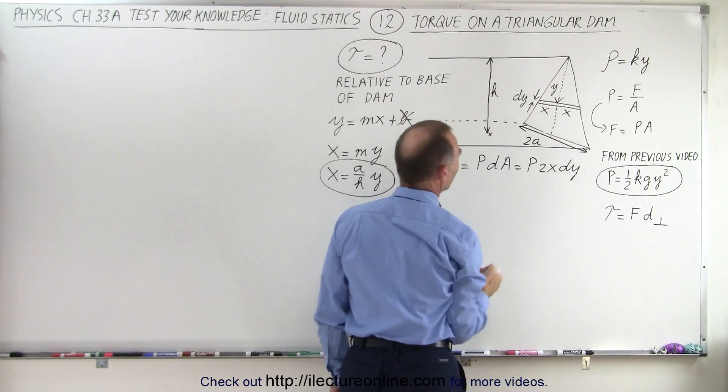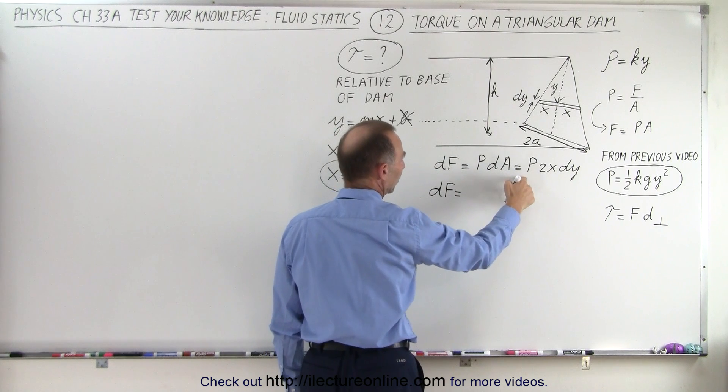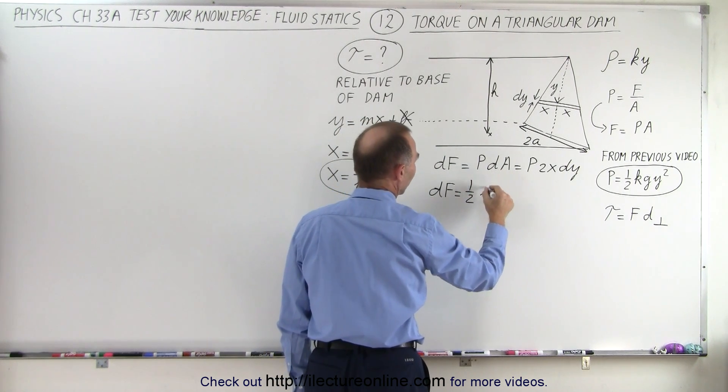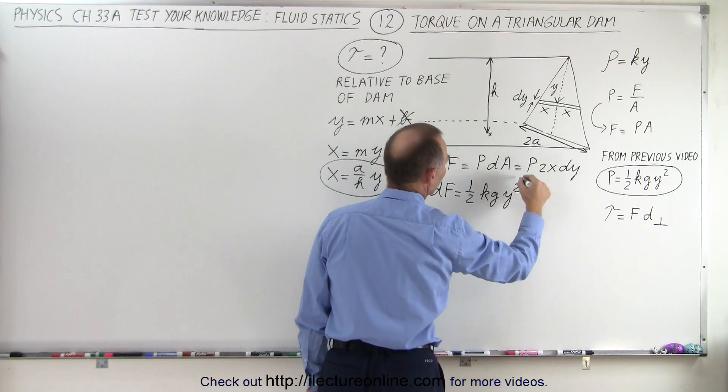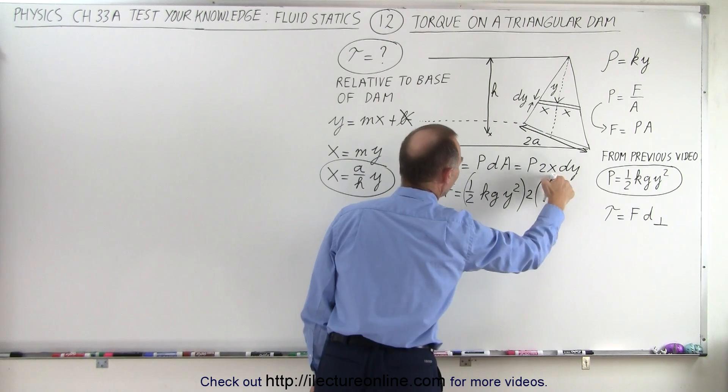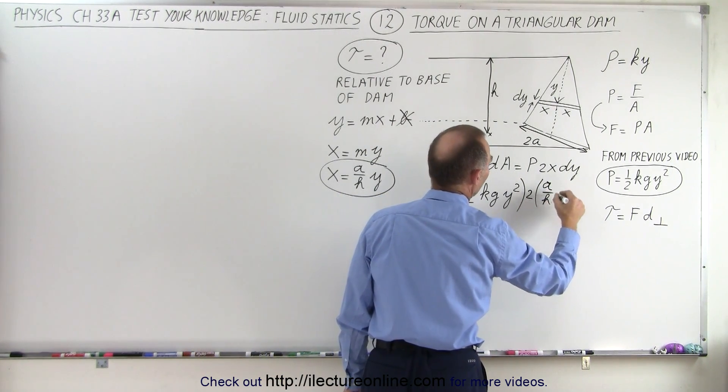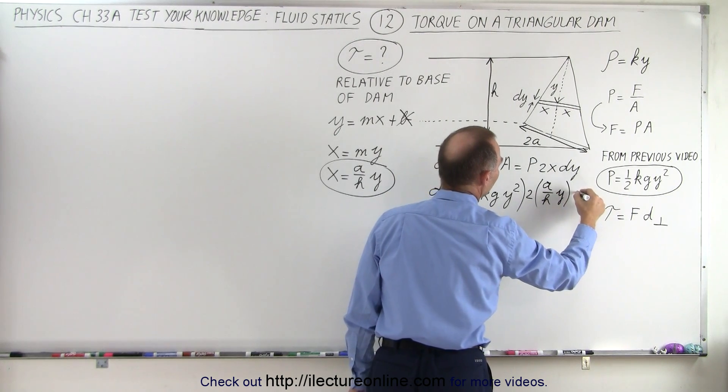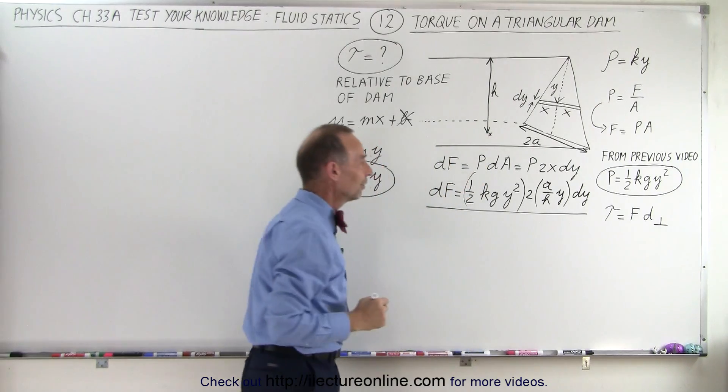So we plug that in here. Here we have dF is equal to the pressure, which is 1 half kg y squared, so that's the pressure, times 2 times x. Now x is going to be A over H times y, A over H times y, and now we still have our dy, and now we have our dF defined.